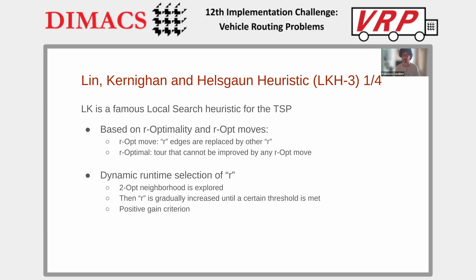An R-opt move consists in removing R edges from the current solution, substituting them with other R edges such that the obtained solution is still feasible, while a solution is said to be R-optimal if there are no R-opt moves that can improve it. What the Lin-Kernighan-Helsgott heuristic introduced was a way to decide, at runtime, the value of R.